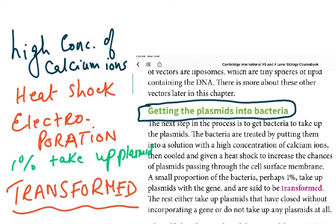The next topic is how we get plasmids — the recombinant DNA — into bacteria. We treat bacteria by placing them in a solution with a very high concentration of calcium ions, then give them a heat shock to increase the chances of plasmids passing through the cell membrane. This process is called electroporation, which helps plasmids pass through the membrane and enter the bacteria.